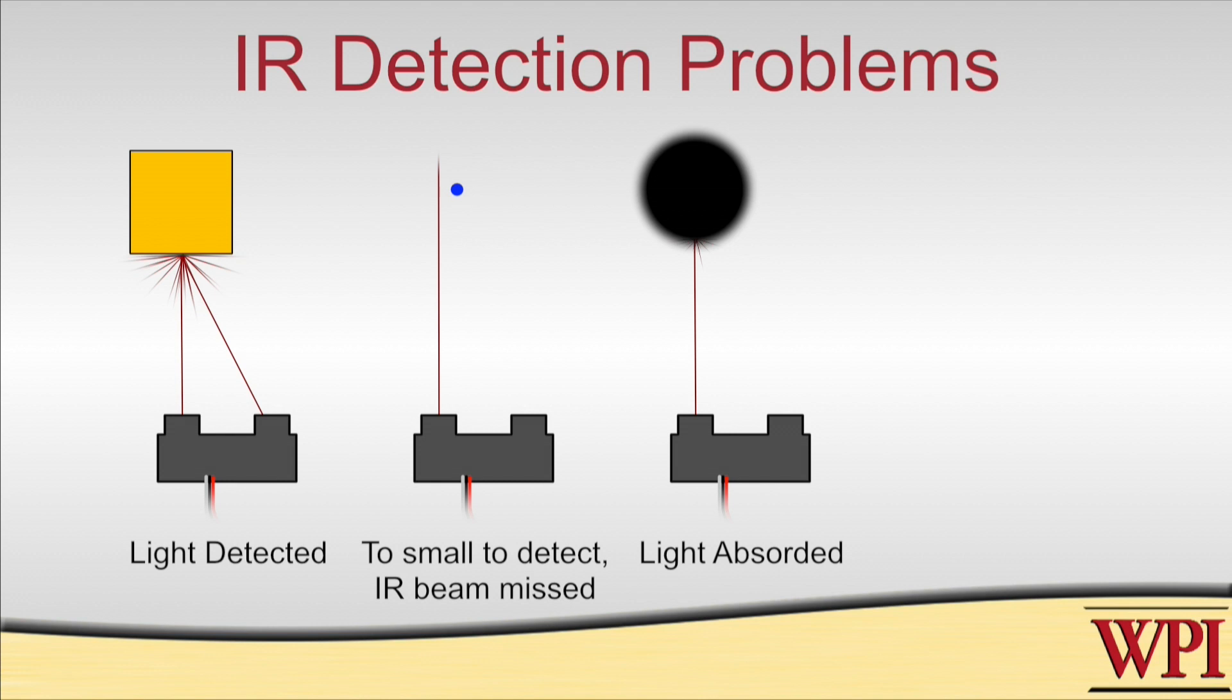If you've got a hard surface, think of a mirror, and the light is hitting that, it's going to reflect off and away from the detector. So you need to have a surface that's more or less perpendicular to the sensor. So that about covers it for the IR sensor.